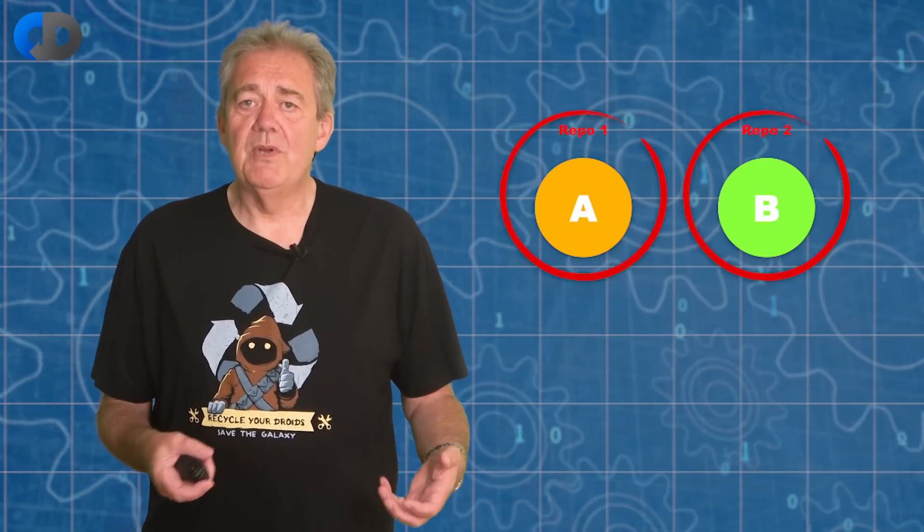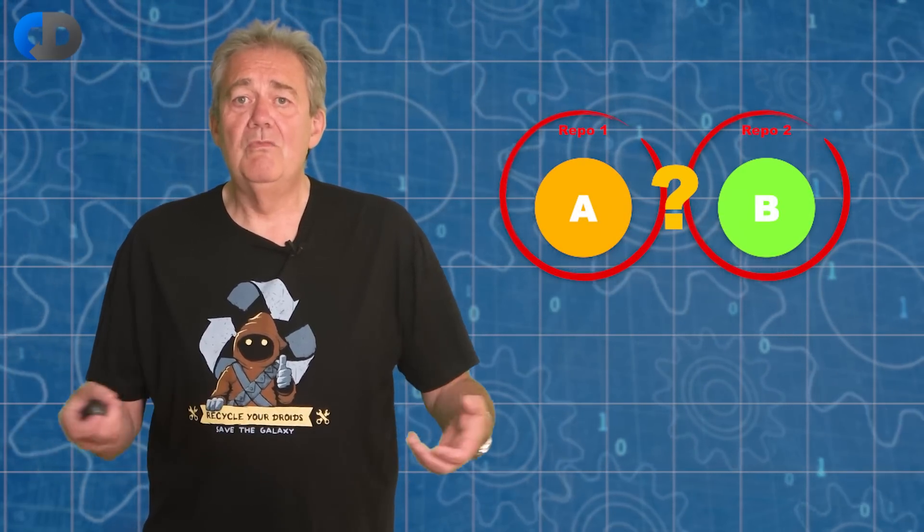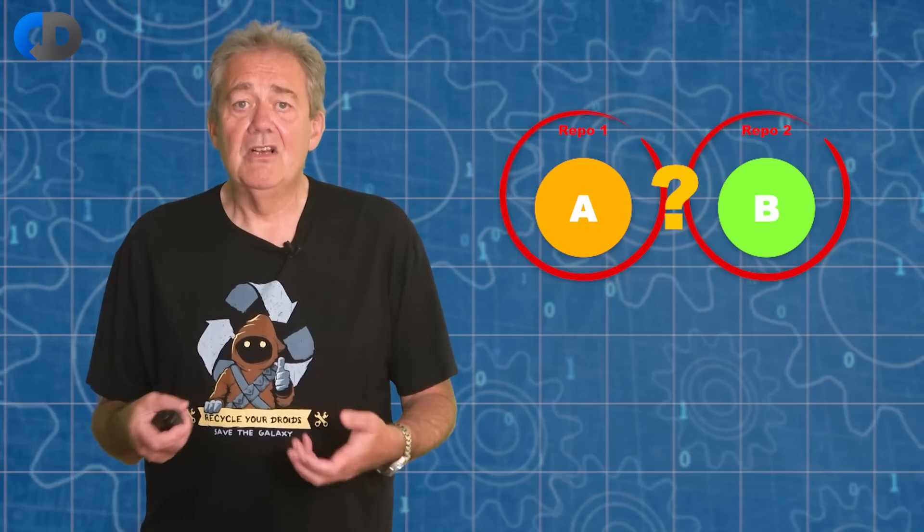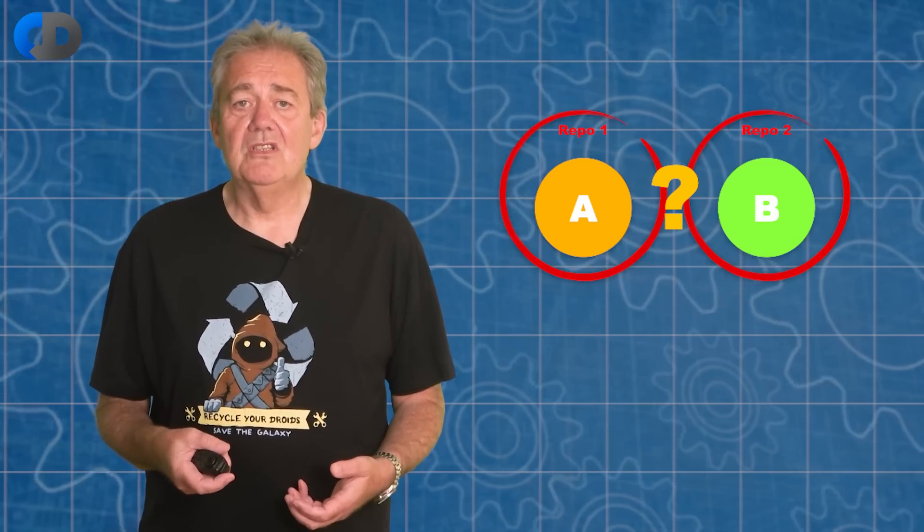If I have two applications, two services, two components, two functions, two or more of anything in fact, how can I tell that they work together?